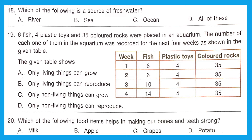Question 18: Which of the following is a source of fresh water — river, sea, ocean, or all of these? Sea and ocean have salty water, so river is the right answer as a source of fresh water. Option A is correct.